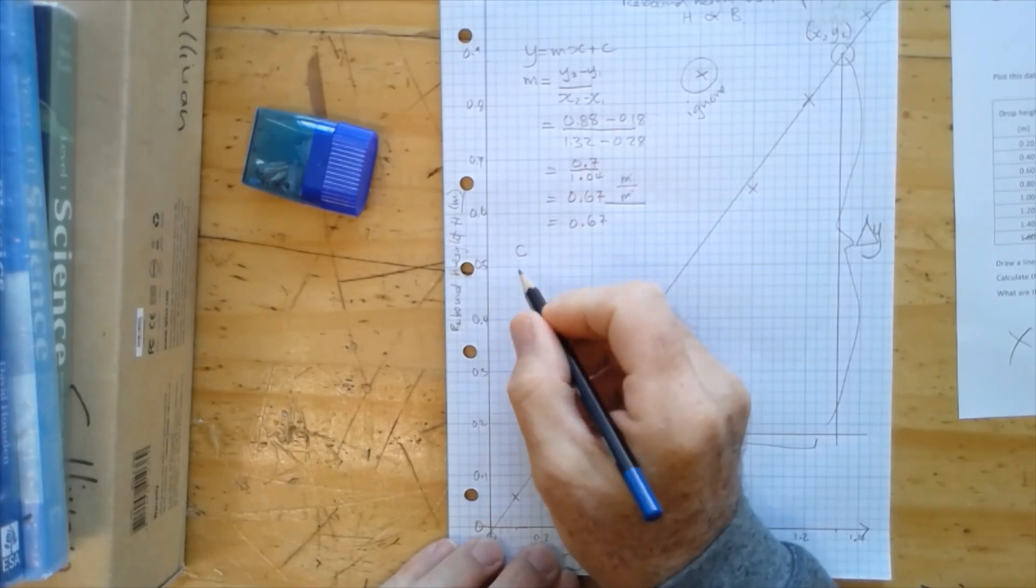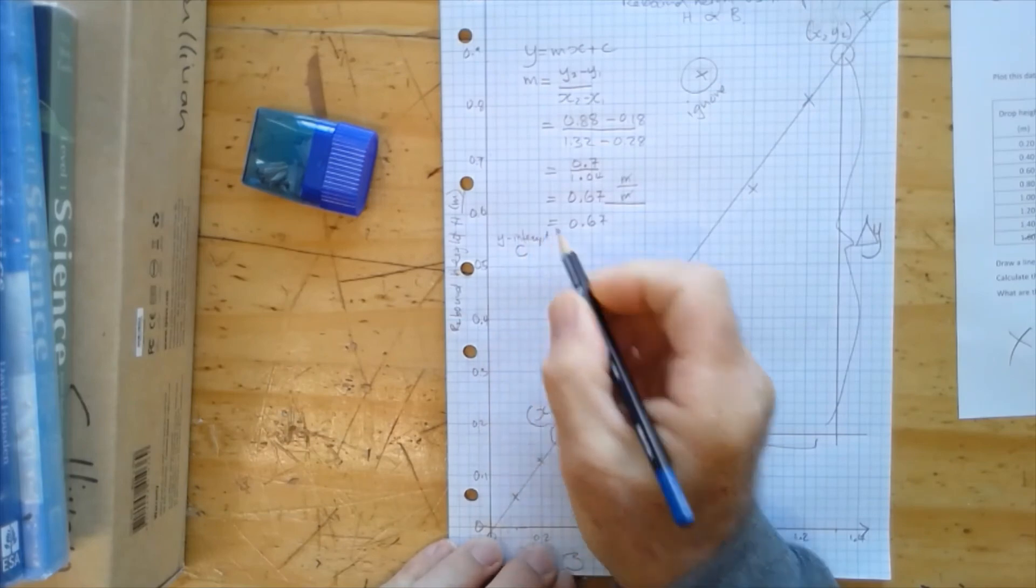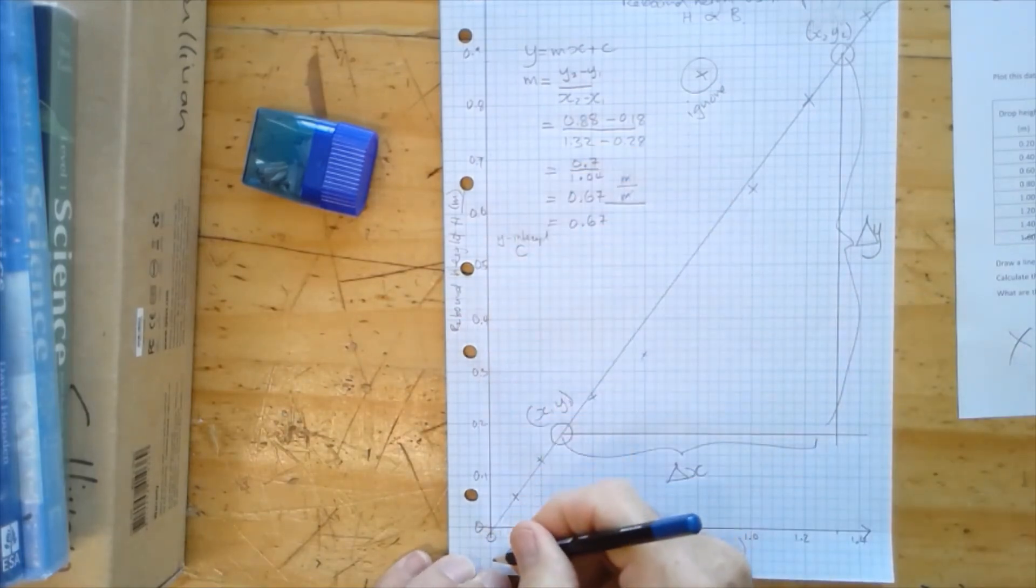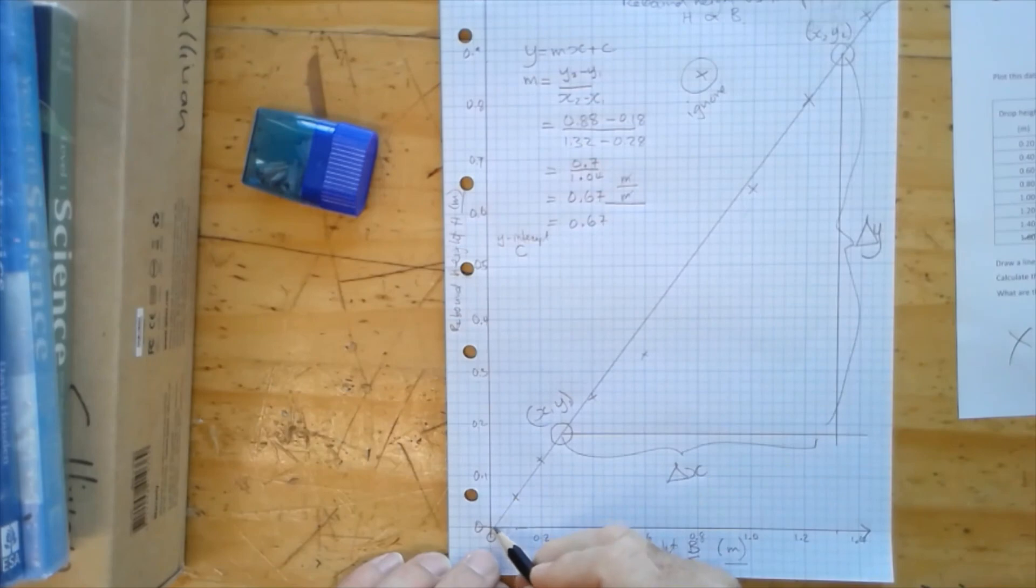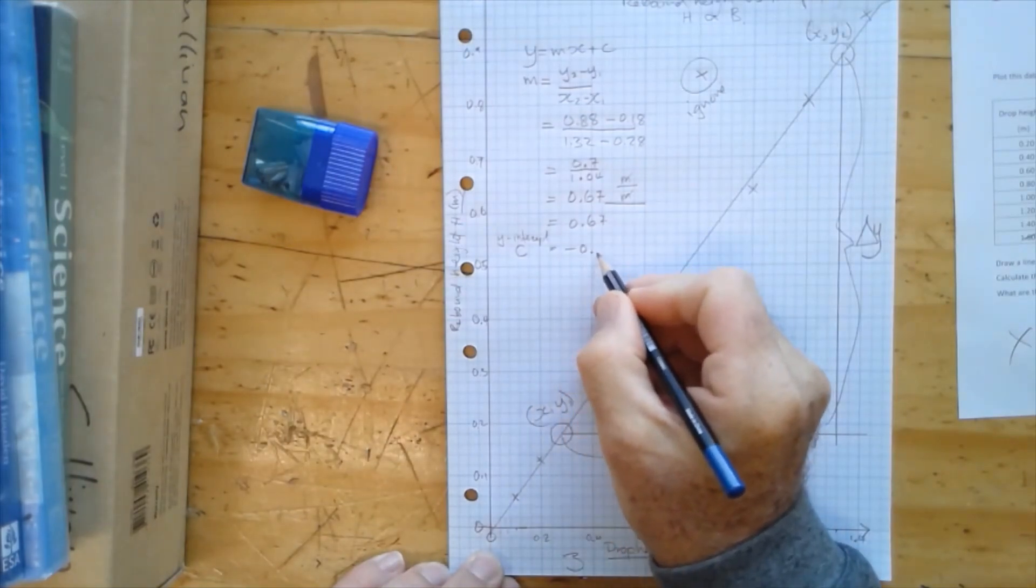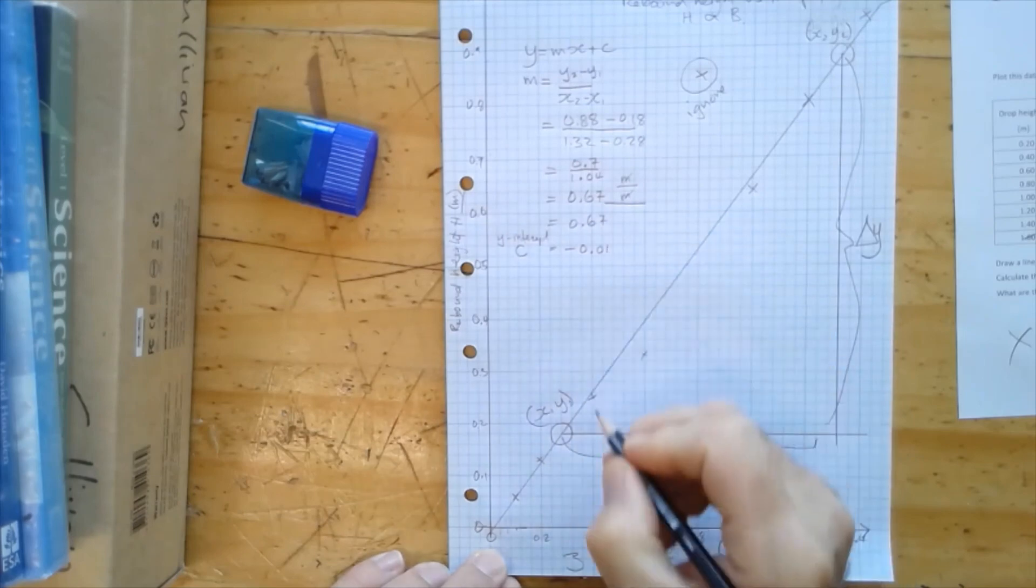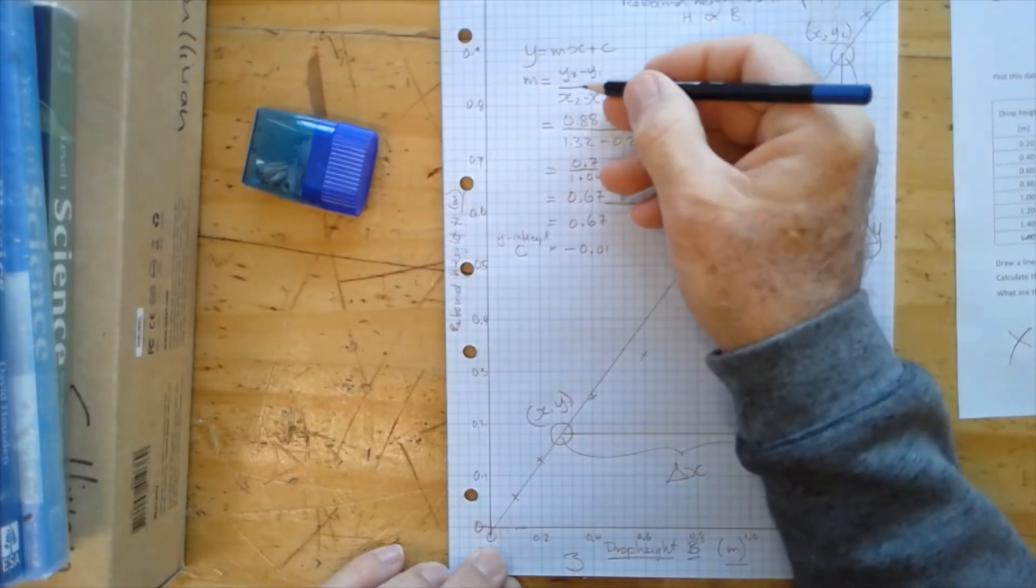This will have no units, so we're going to have 0.67. And now we're also going to look at the y-intercept, where the line passes through the y-axis. And we can see it goes slightly negative, it's zero, it's negative 0.01, 0.01. So we've got our gradient m.